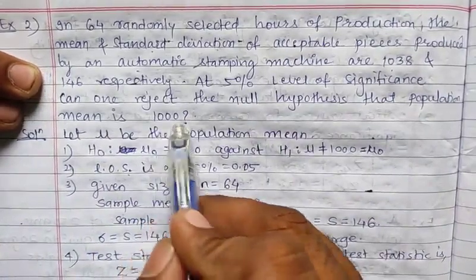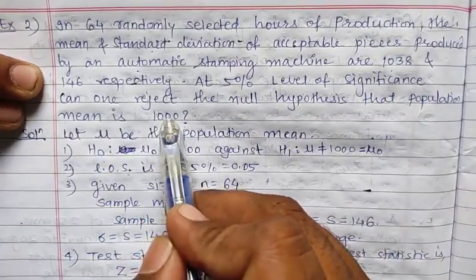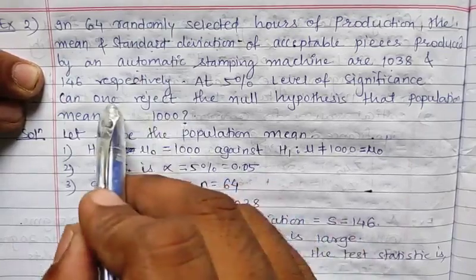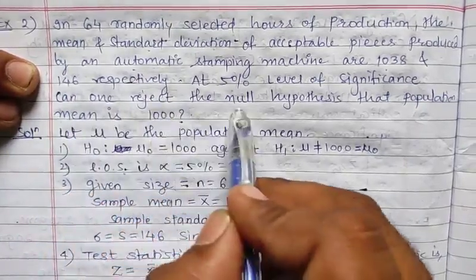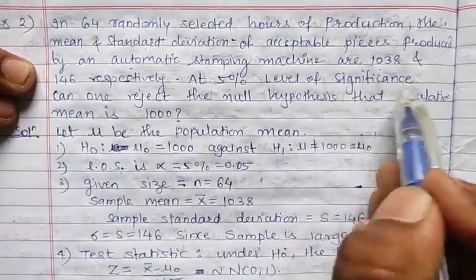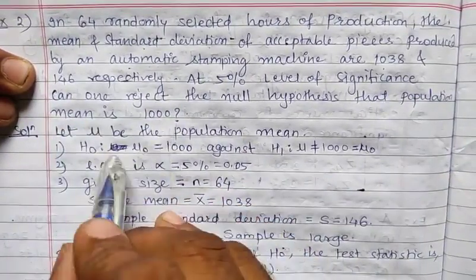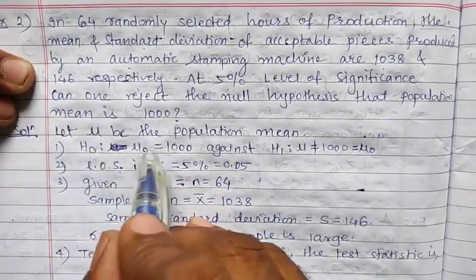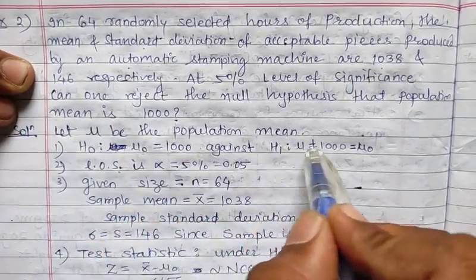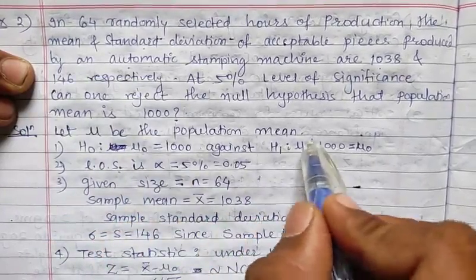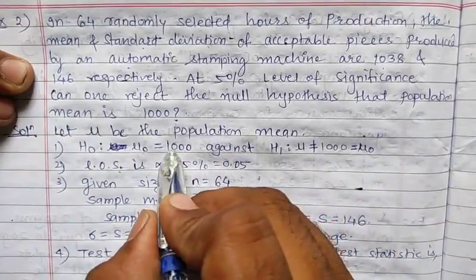This is the value of μ₀. We check H₀: μ = μ₀ against H₁: μ ≠ μ₀. The value of μ₀ is 1000.